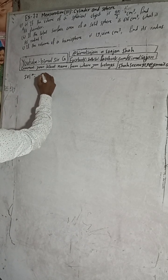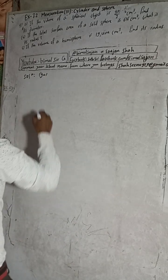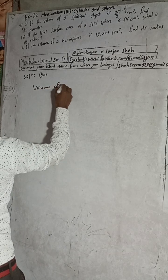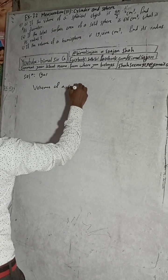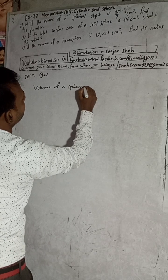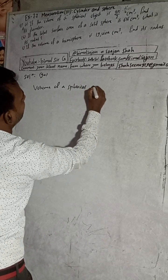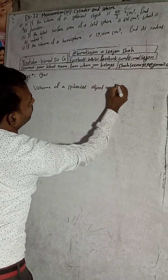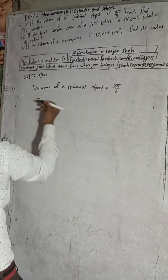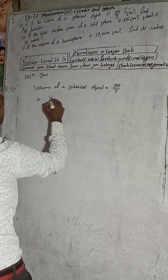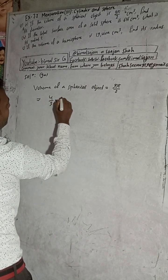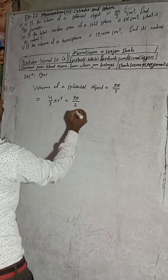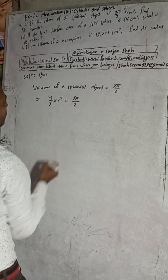find its diameter. So here is solution for this 9a. The volume is given here, volume of a spherical object is given here, 9π/2. And the volume for a sphere is 4/3 πr³. This is the volume formula. And this is 9π/2, so π cancel from both sides.